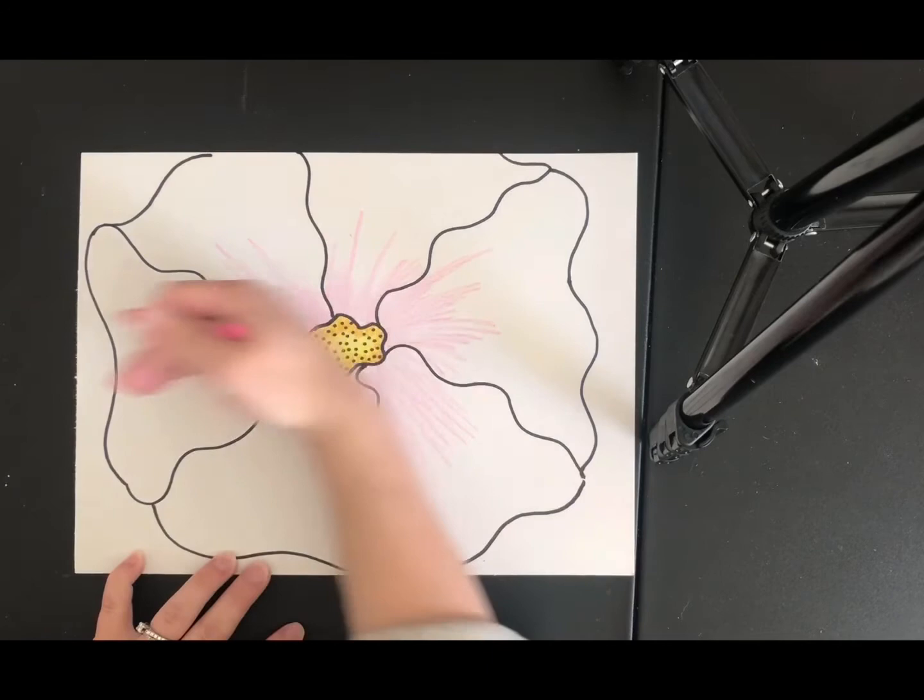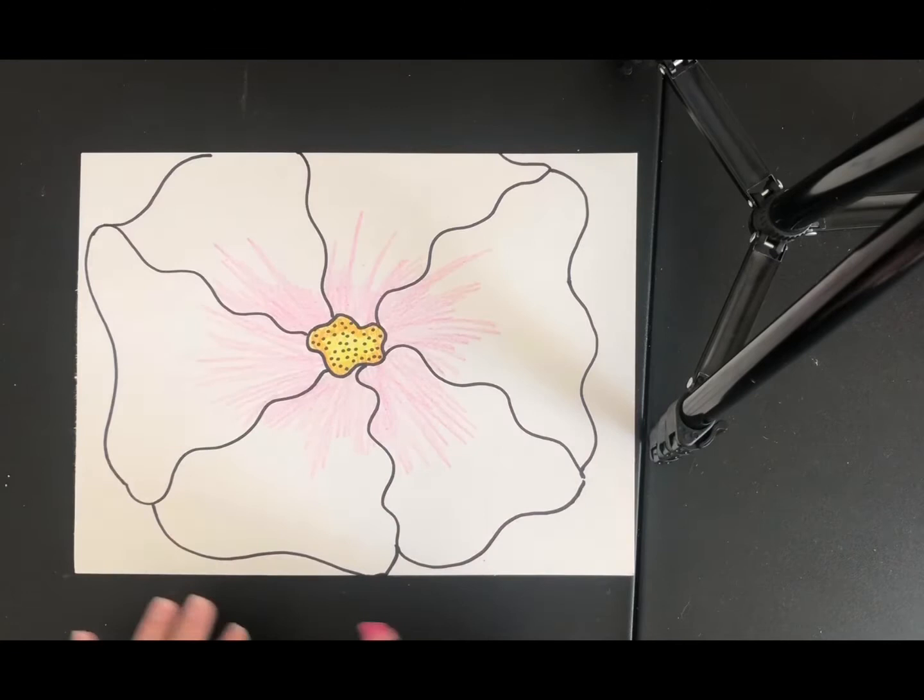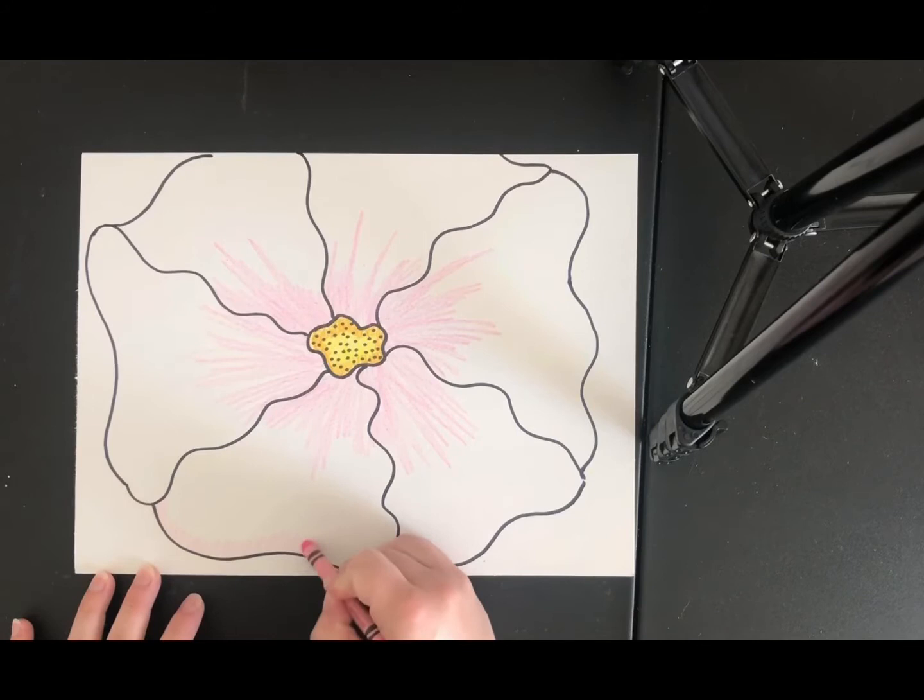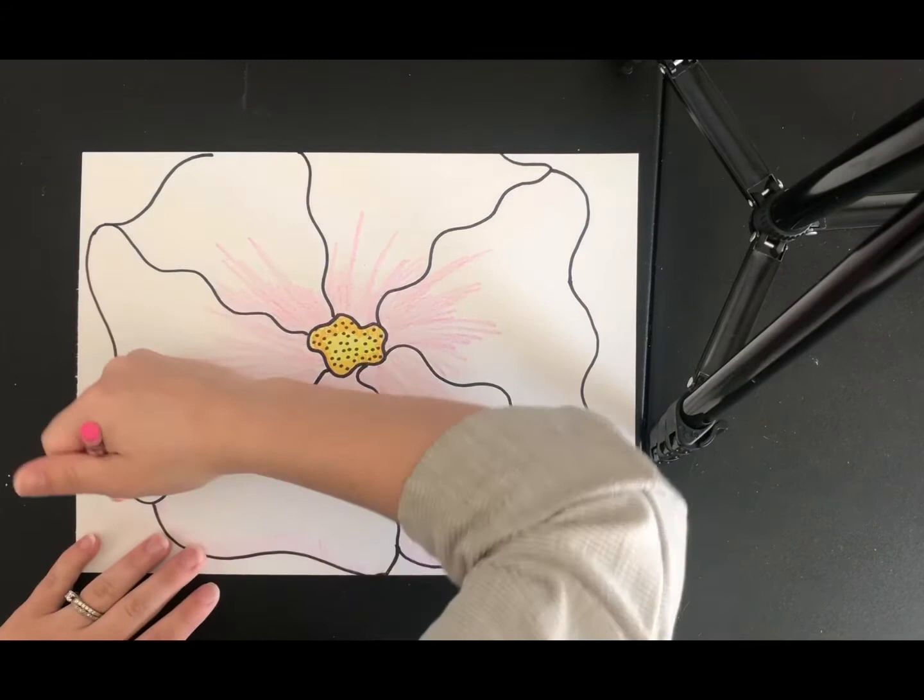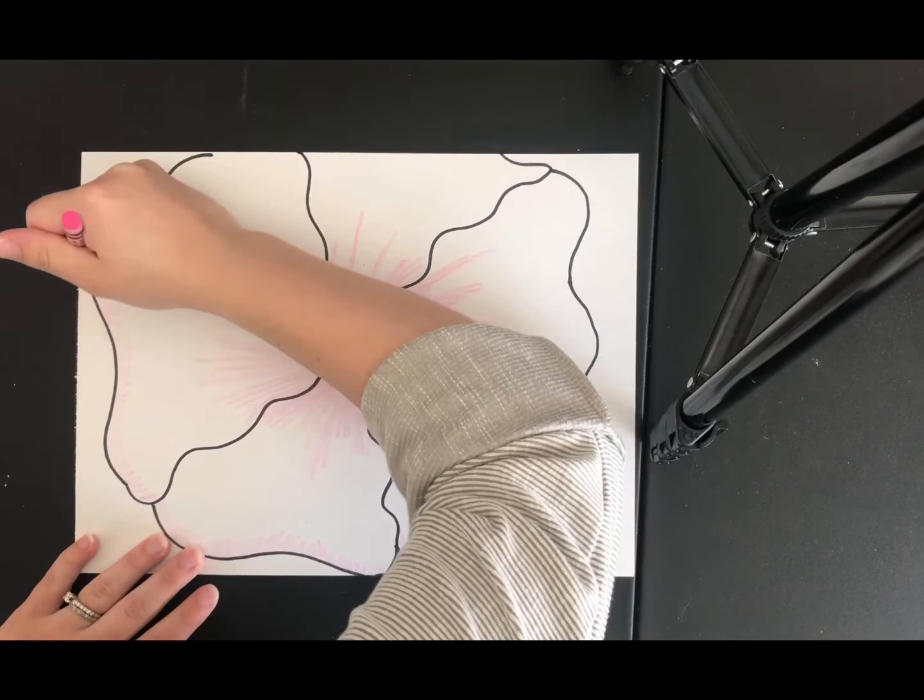Make sure that when you color you color the direction of the petal. So the petal is going this way you want to color that way. If it's going this way you want to keep your lines going that way. If you want you can even add just a little bit pink on the ends. Again I'm making sure that I'm coloring in that direction.